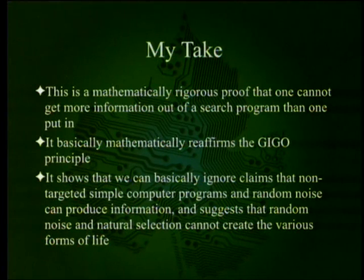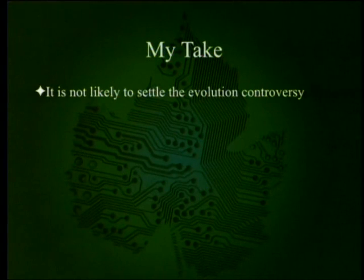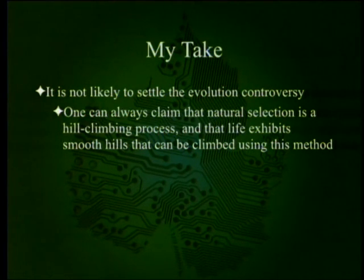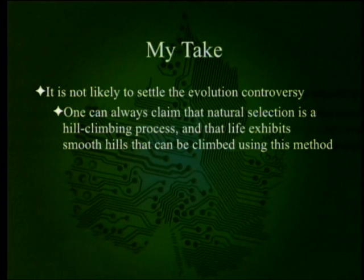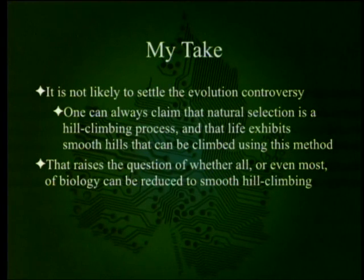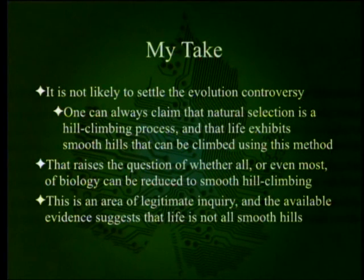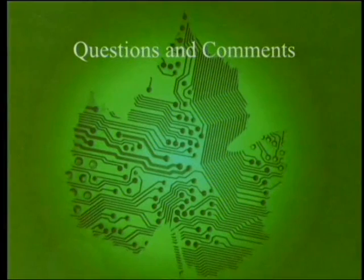The presenter's own take: this is a mathematically rigorous proof that one cannot get more information out of a search program than one put in. It mathematically reaffirms the garbage-in, garbage-out principle well known in computer science. It shows we can ignore claims that non-targeted simple computer programs in random noise can produce information, suggesting that random noise and natural selection cannot create the various forms of life. It is not likely to settle the evolution controversy, as one can always claim natural selection is a hill-climbing process and that life exhibits smooth hills.